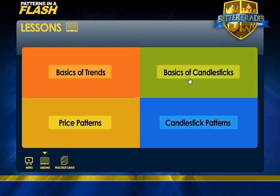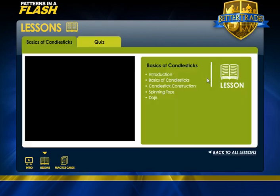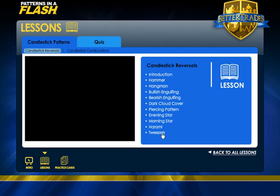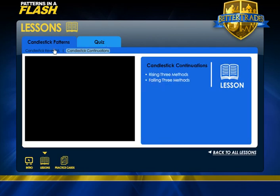After that, I would move on to the candlesticks. There is a little bit of debate — you could go from Basics of Trends straight to Basics of Candlesticks, but I'd go straight from Basics of Trends to Price Patterns because they're a little more connected conceptually. Then move to Basics of Candlesticks and from there go to Candlestick Patterns, because these two are more well connected. Basics of Candlesticks is relatively short — candlesticks seem complex at first, but the more you study them, the simpler they become. Each of these four sections has a quiz, including the final Candlestick Patterns quiz.